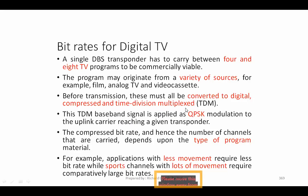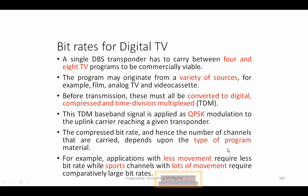The TDM baseband signal is applied as QPSK — Quadrature Phase Shift Keying — to the uplink carrier reaching a given transponder. So it is based on TDM, and then the baseband signal is applied as QPSK. The compressed bit rate and hence the number of channels carried depends on the type of program being broadcasted.